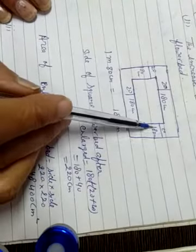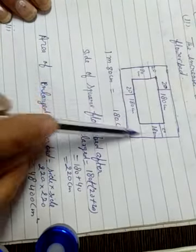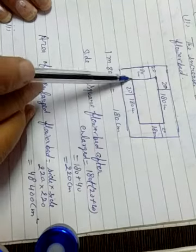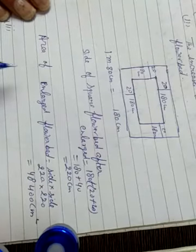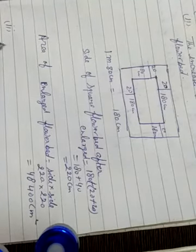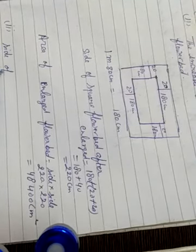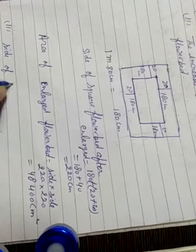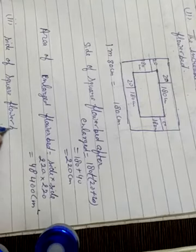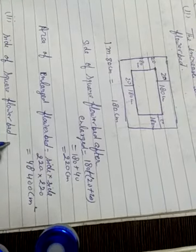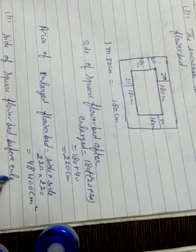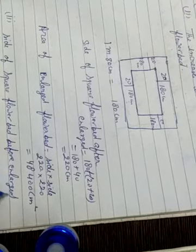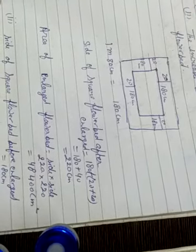Now for the second part: the increase in the area of the flower bed. To find how much the area increased, we first need the area of the original flower bed — the 180 cm one. We write: side of square flower bed before enlargement. Its side before enlarging was 180 cm.